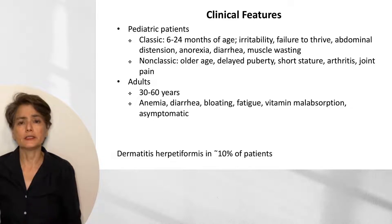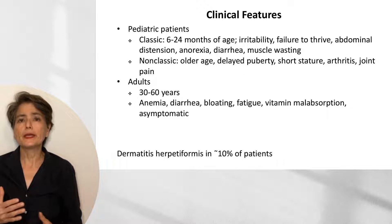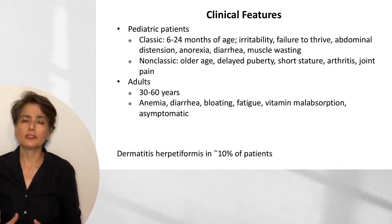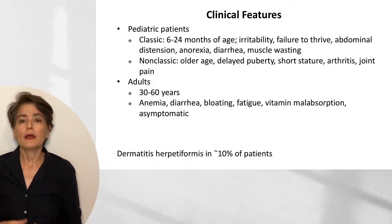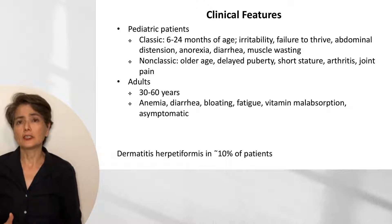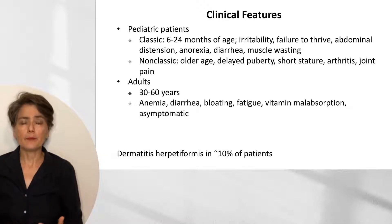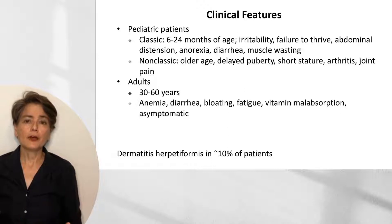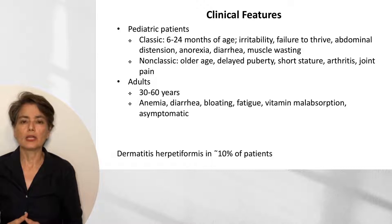In older patients, you can get similar GI symptoms, but also because of the malnutrition, you can get delayed puberty, short stature, and extra-gastrointestinal symptoms like arthritis and joint pain. There is a subset of people not diagnosed until adulthood, typically in the range of 30 to 60 years. They may present with anemia due to mucosal ulceration and blood loss, diarrhea, bloating, fatigue, and vitamin malabsorption as we lose our villi.